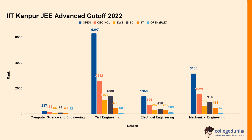For Electrical Engineering at IIT Kanpur in 2022, cut-off rank was 1368 for Open category, 696 for OBC-NCL, 287 for EWS, and 410 for SC. For Mechanical Engineering, cut-off rank was 3155 for Open category, 1529 for OBC-NCL, 592 for EWS, and 914 for SC.